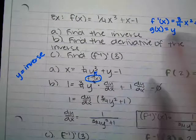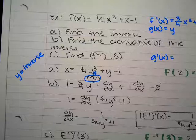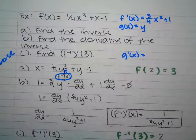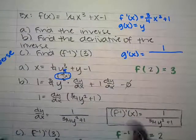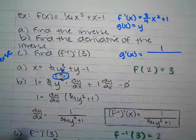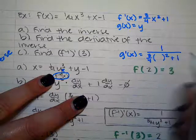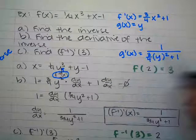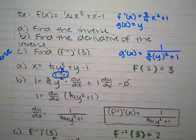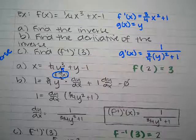Now let's do the shortcut. g prime of x equals 1 over — and what are we going to do? We plug in something for x in f prime. The something we plug in for x is g of x, which is y. So it's 1 over three-fourths y squared plus one. And if you compare that to your answer, that's what your answer was.